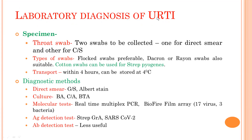For laboratory diagnosis of upper respiratory tract infection, the specimen is very important. The specimen is usually a throat swab, and two swabs should be collected — one for direct smear and one for culture and sensitivity. Flocked swabs are preferable; dacron or rayon swabs are also suitable. For isolation of Streptococcus pyogenes, cotton swabs can be used. Diagnostic methods include direct smear — Gram stain smear, or if diphtheria is suspected, Albert stain smear. Culture depends on the bacteria suspected: usually blood agar or chocolate agar, as Streptococcus pyogenes is most common. If diphtheria is suspected, blood tellurite agar is used.